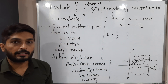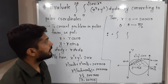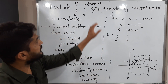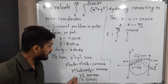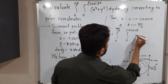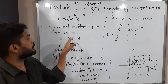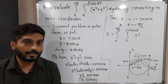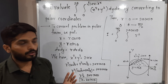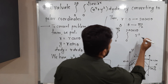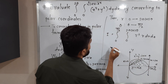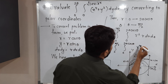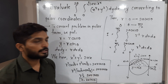In polar form, the inner integration is always with respect to r and the outer with respect to θ. Limits of r: 0 to 2a cosθ; limits of θ: 0 to π/2. Since x² + y² = r², we write r² directly. Also dx dy = r dr dθ, so the integrand becomes r² · r = r³. The integral is: I = ∫₀^{π/2} ∫₀^{2a cosθ} r³ dr dθ.